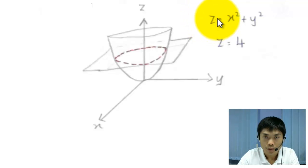So when z equals 4, x squared plus y squared equals 4, which means that it is a circle. And the intersection curves that arise from the intersection between the elliptic paraboloid and the plane of z equals 4 is a circle with a radius of 2.